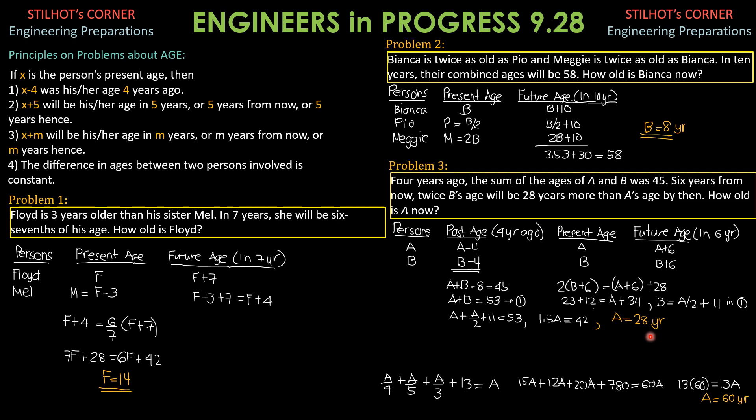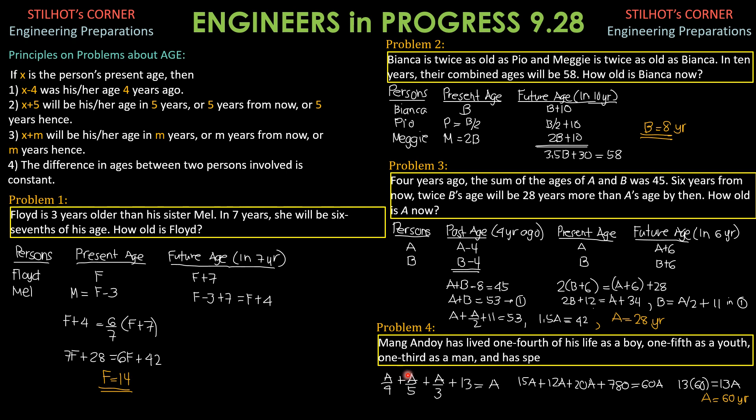That's the present age of A. And finally, problem 4, Mang Andoy has lived 1 fourth of his life as a boy, 1 fifth as a youth, 1 third as a man, and has spent 13 years in his dotage. How old is he?